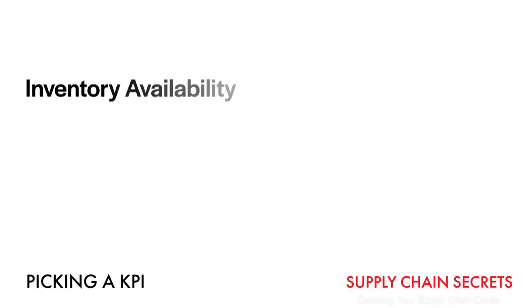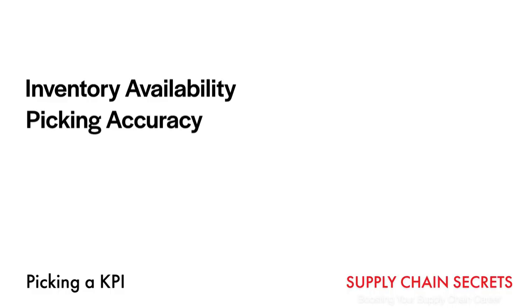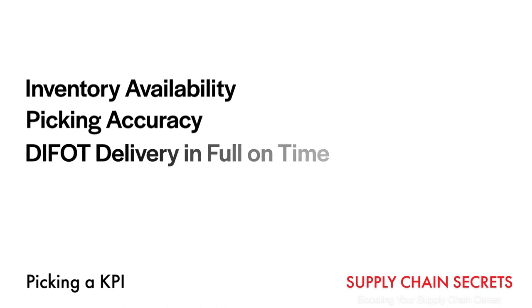What if you had poor customer service? Think about what things have an impact on that. One would definitely be inventory availability — if you haven't got the product, you're not able to pick it and deliver it. Measuring that would help you identify issues and achieve better customer service. Picking accuracy would also be a good one to drive the right behaviors. And of course our favorite, DIFOT — delivery in full on time — is a great KPI for measuring and improving customer service.